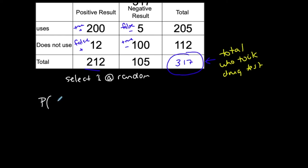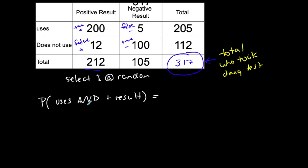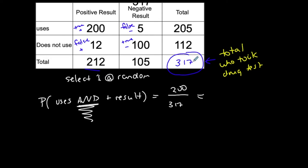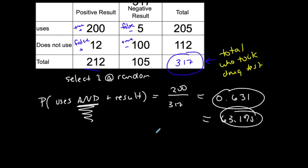Now the AND case — the intersection. The probability that the person uses AND had a positive result: here's the row for uses and the column for positive results, and their intersection is 200. So 200 out of 317 people used AND had a positive result. 200 divided by 317 is approximately 0.631, or 63.1% in percentage form. This is the AND case — the intersection.